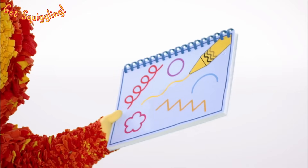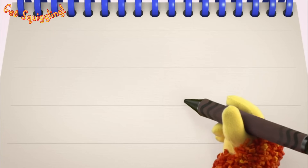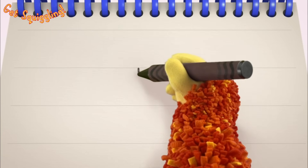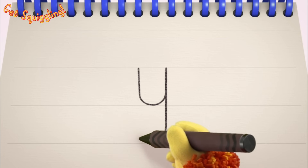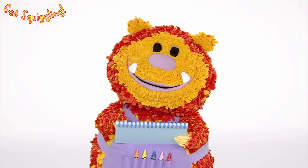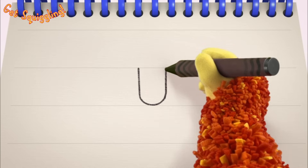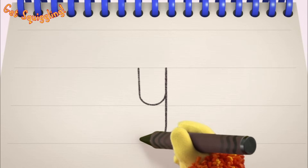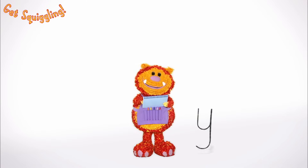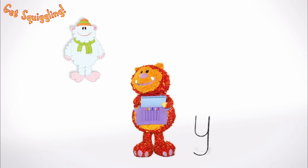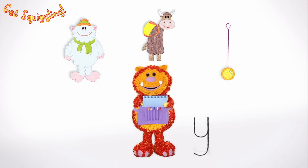Have you got your squiggle pads and squiggle sticks ready? Let's get squiggling! Holding your squiggle stick like this, move it down, round, up, down and round — the letter Y! Let's squiggle it again: go down, round, up, down and round — the letter Y! Shall we squiggle some things that start with the letter Y? A yeti, a yak and a yo-yo — they all begin with the letter Y!